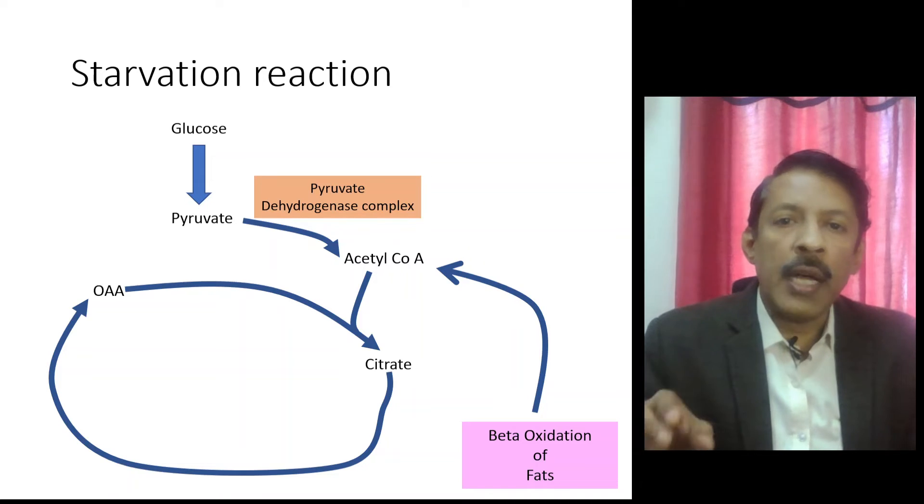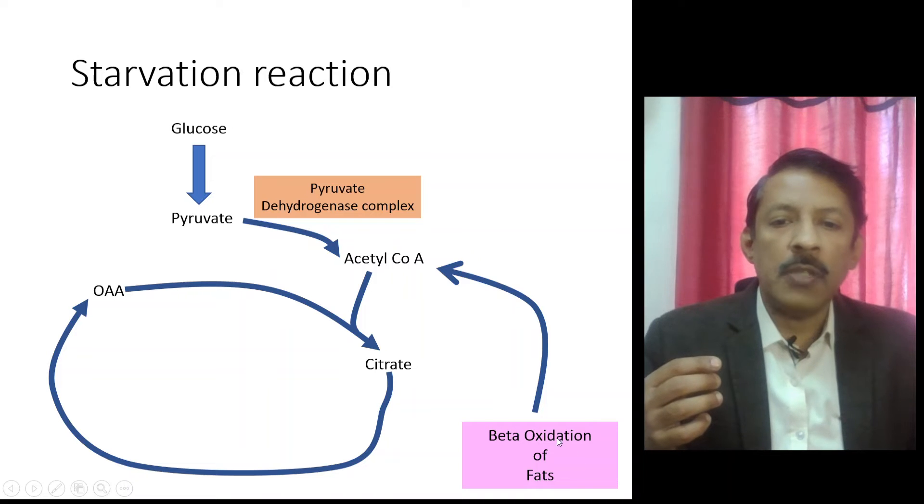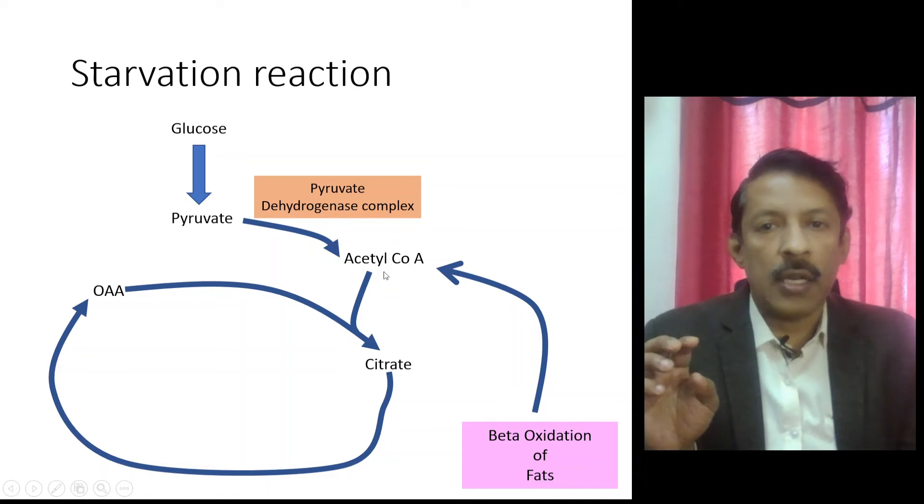In order to meet the requirements of acetyl coenzyme A to produce energy through the TCA cycle, the body switches on to beta oxidation of fatty acids. Beta oxidation of fatty acids produces acetyl coenzyme A and the TCA cycle occurs.